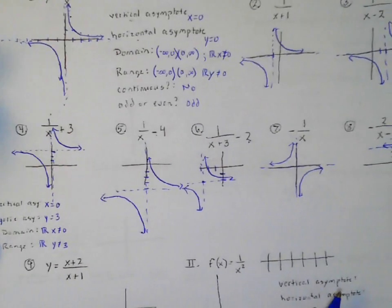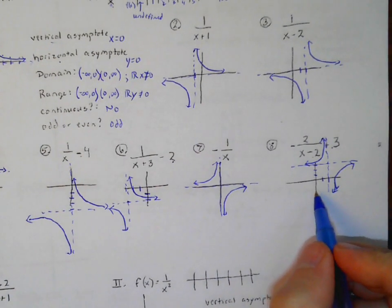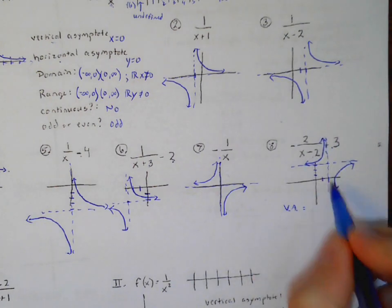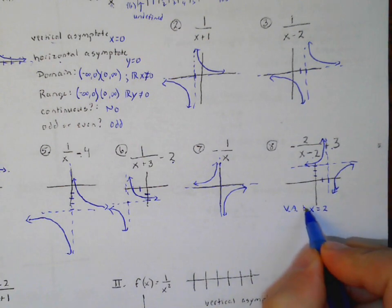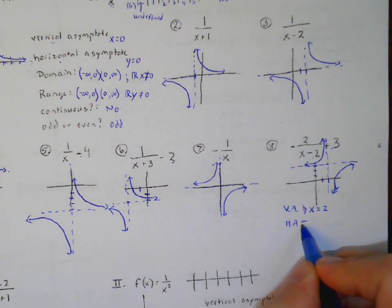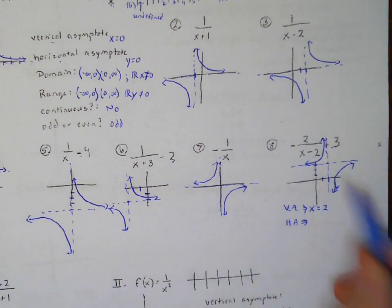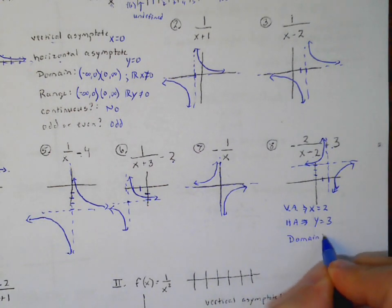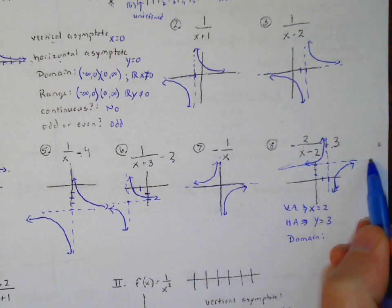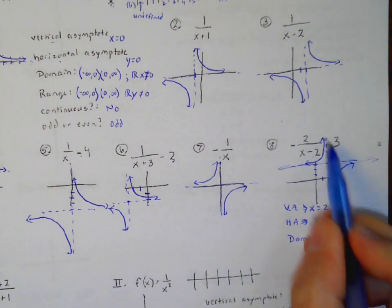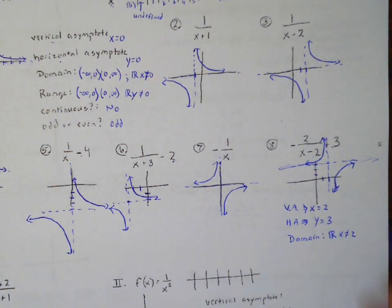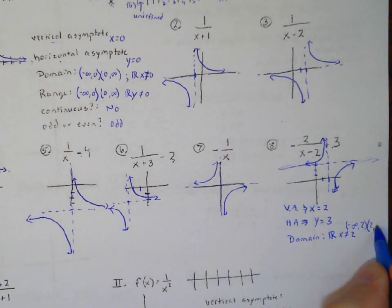Let's look at a specific example. The vertical asymptote is at x equals 2, and the horizontal asymptote is at y equals 3. For the domain, all these x values continue except right here at 2 — so all real numbers but x cannot equal 2, or in interval notation from negative infinity to 2 and from 2 to infinity.